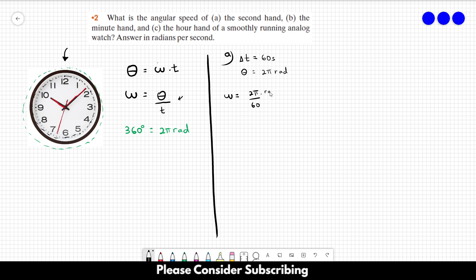Using this equation, we find that the angular speed is equal to 2π divided by 60. It's better if you write the unit because maybe you don't know the unit by heart. This is the answer: 0.105 radians per second.